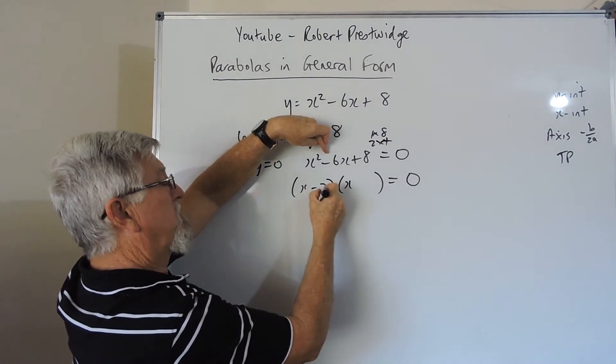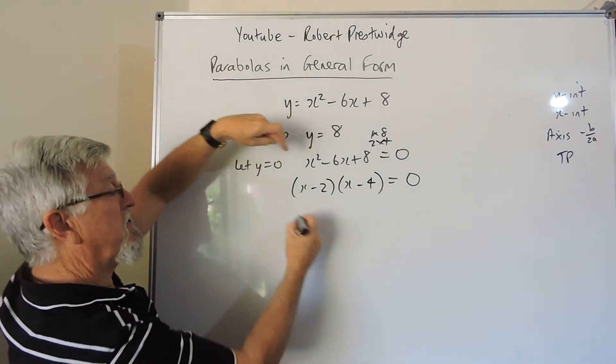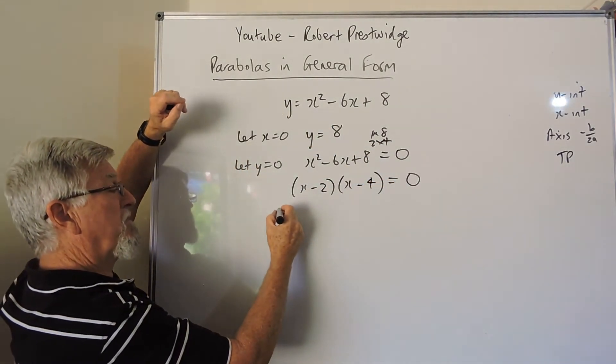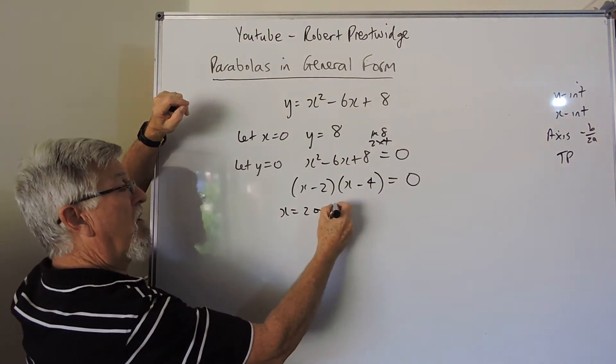They're going to add up to 6, so that's minus 2 and minus 4, add up to minus 6, so the roots are, or the x-intercepts are x equals 2 or 4.